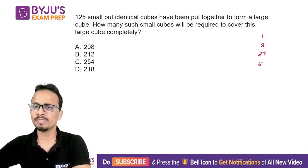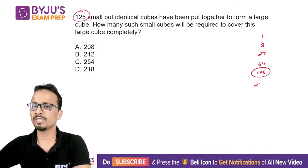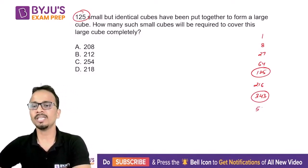Then 4³ is 64, 5³ is 125 which will be required in this question, 6³ is 216, and 7³ is 343 which will also be required.